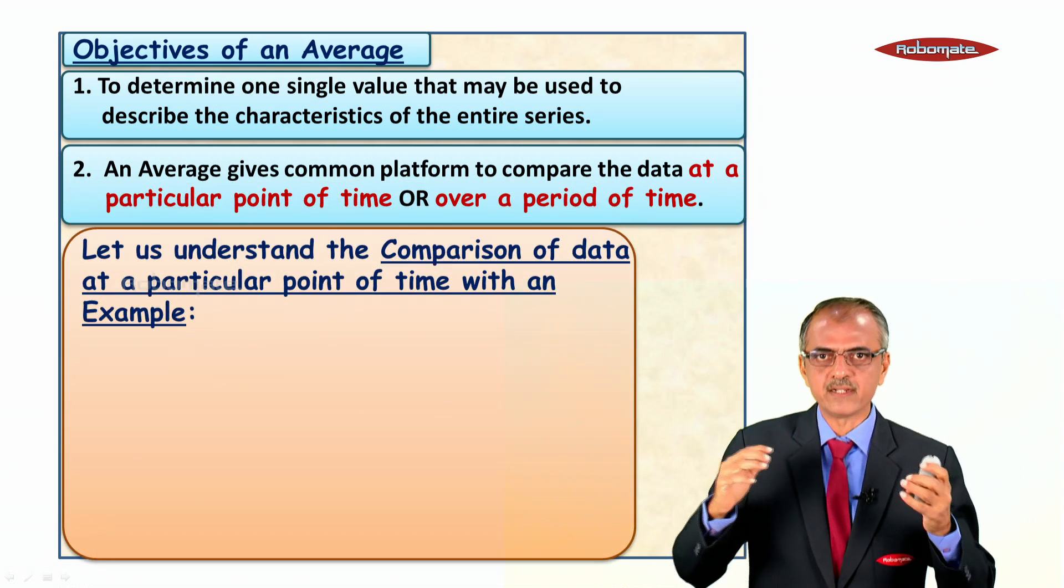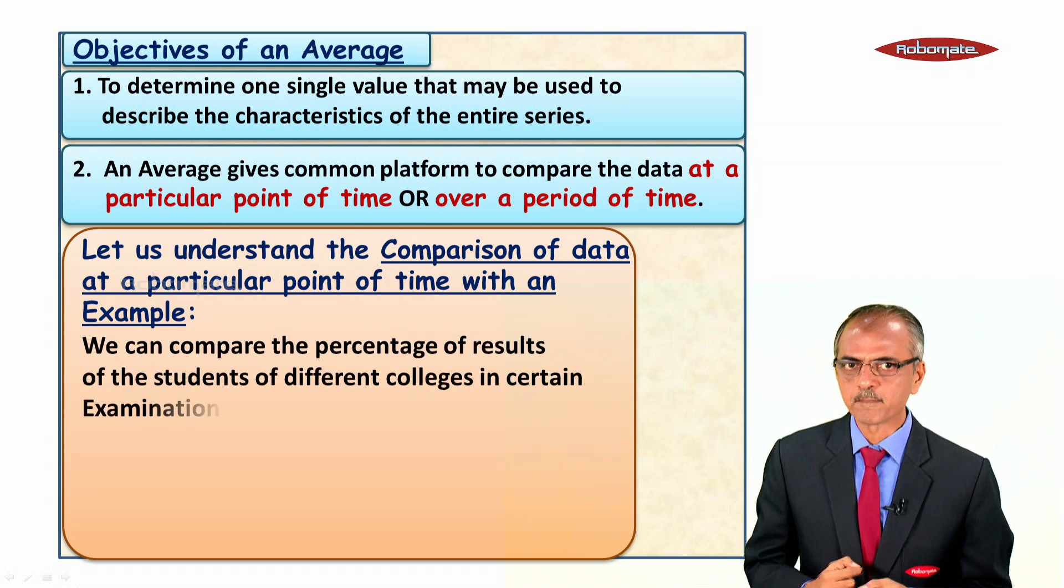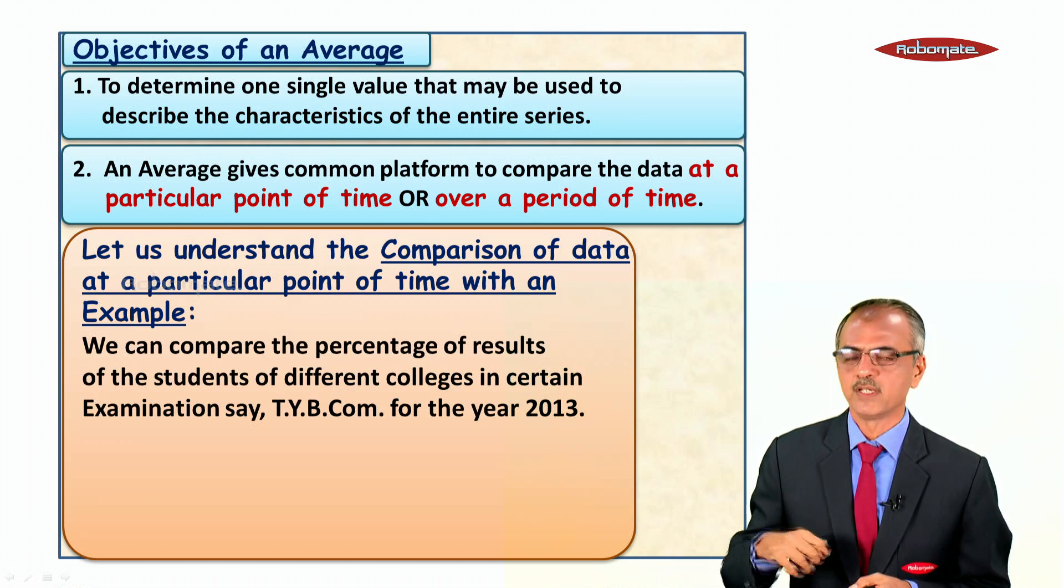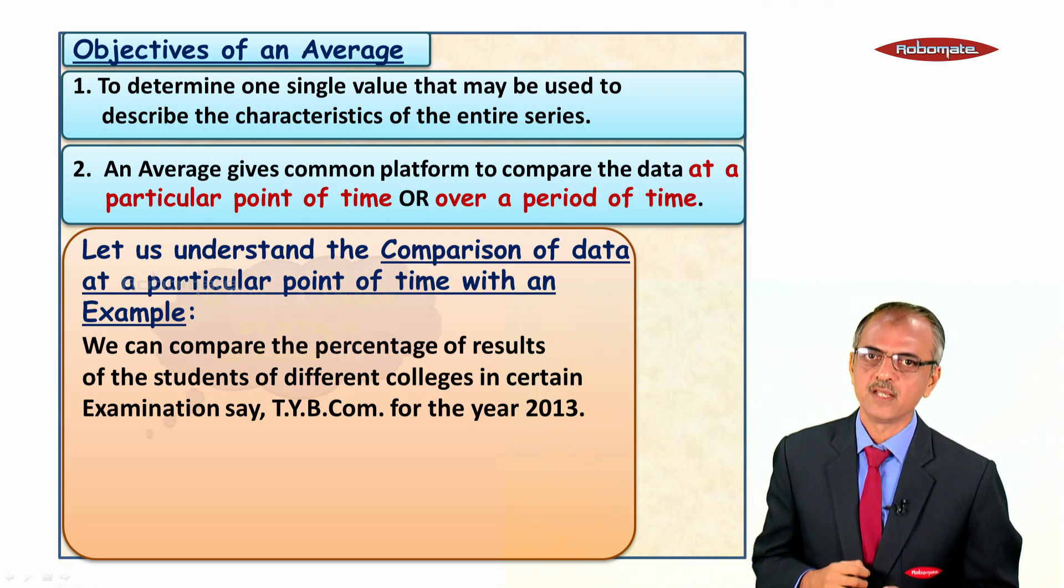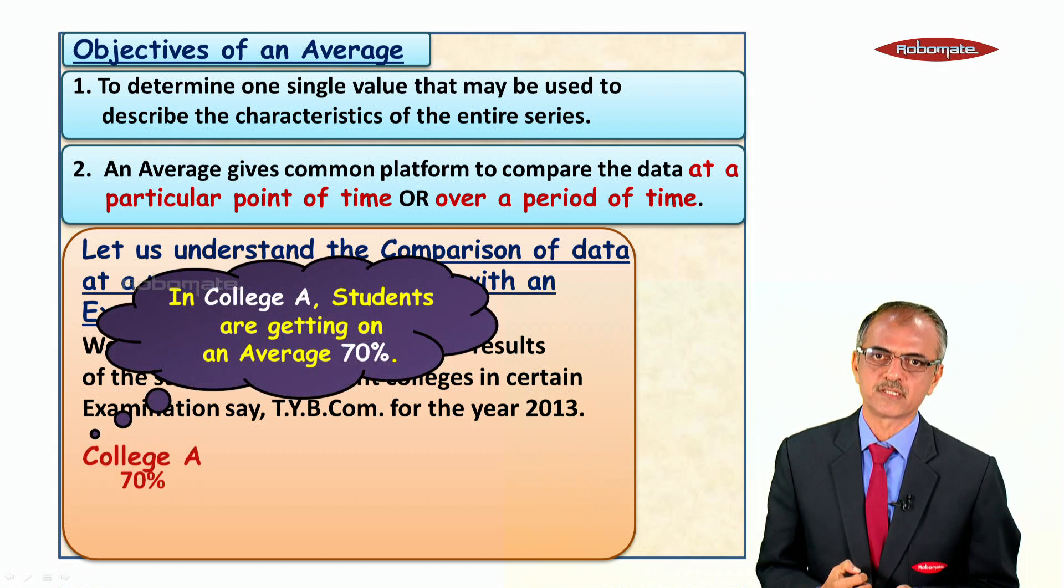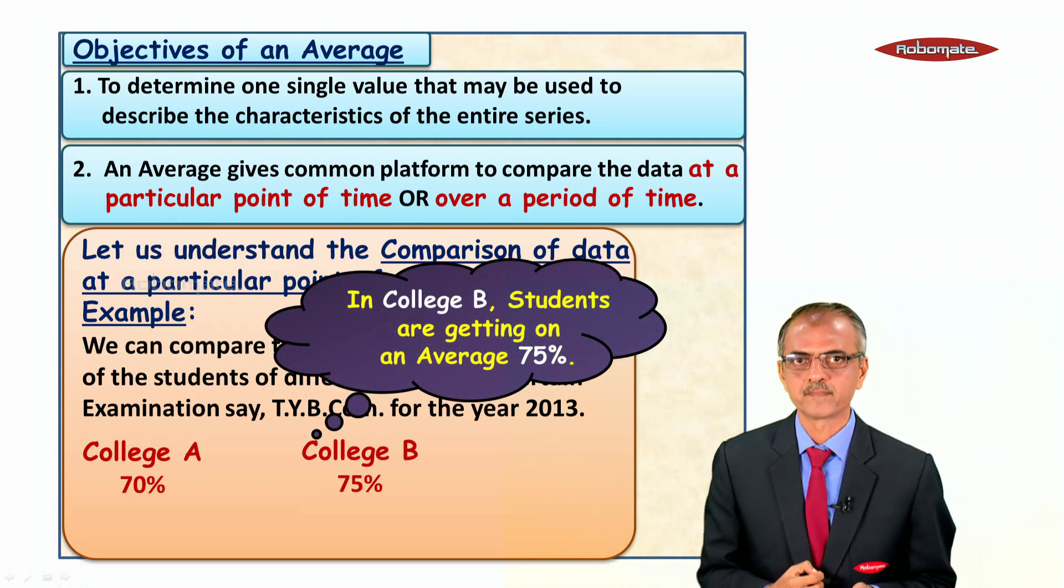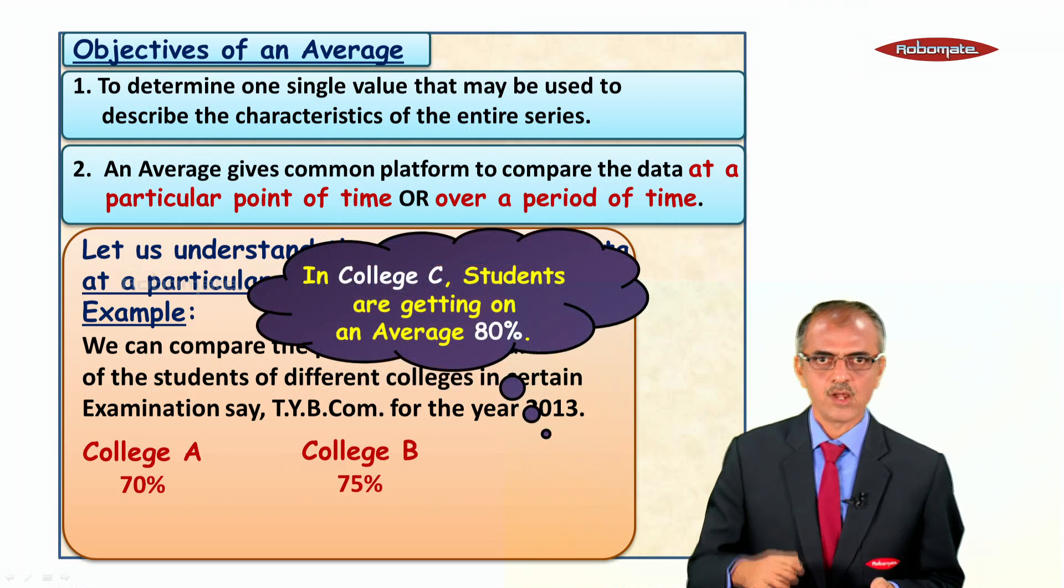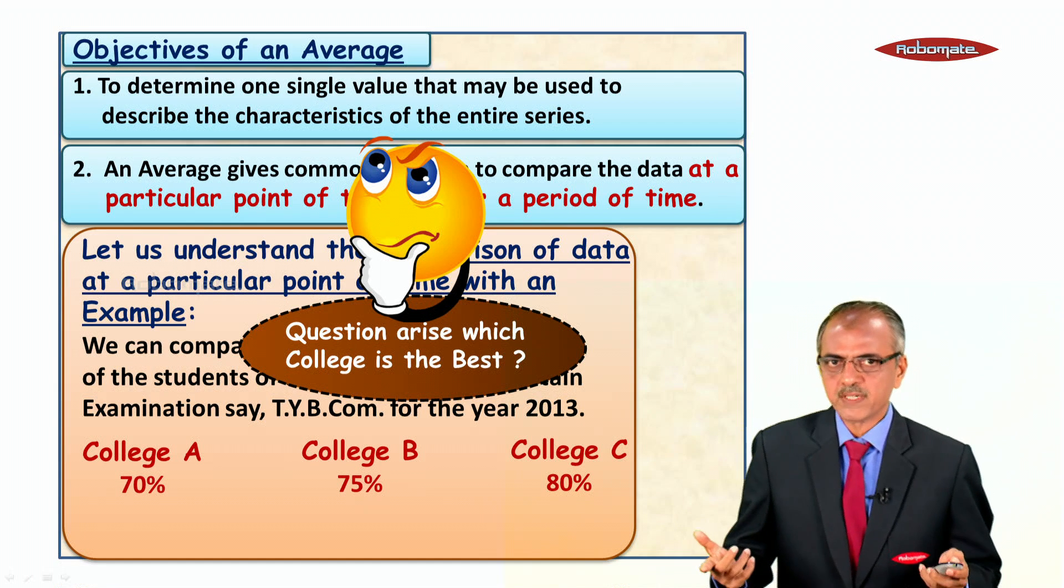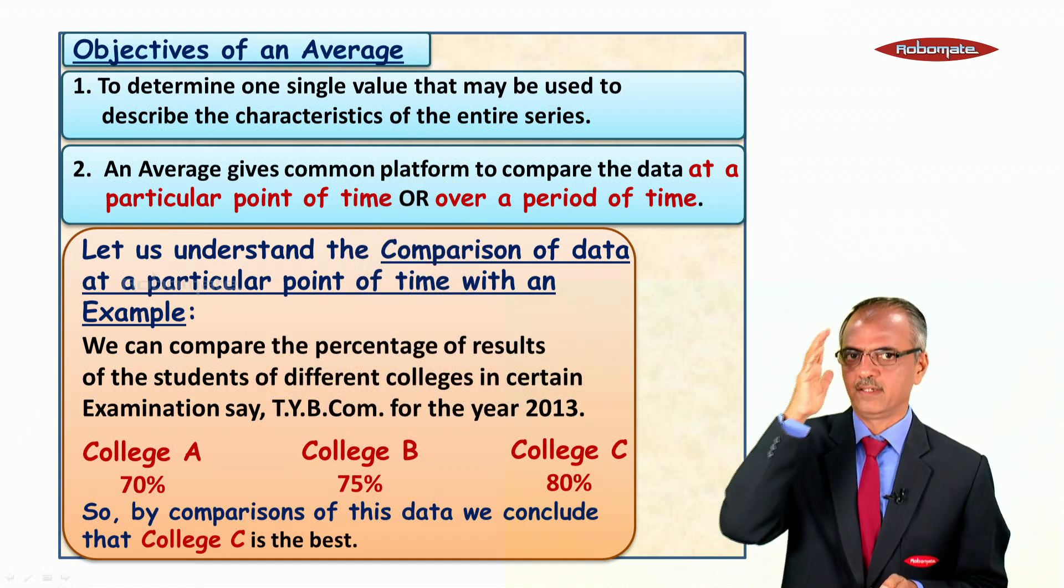Let us understand the comparison of data at a particular point of time with an example. We can compare the percentage of results of students of different colleges in TYBCOM for the year 2013. College A students get on average 70 percent, College B gets 75 percent, College C gets 80 percent. Which college is the best? By comparison of the data, we conclude that College C is the best.